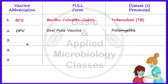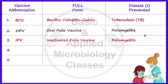Now let's talk about the third vaccine, that is IPV. The full form of IPV is Inactivated Polio Vaccine. Again it is for poliomyelitis, and the route of administration of IPV is different from OPV — it is the intramuscular route or the subcutaneous route.